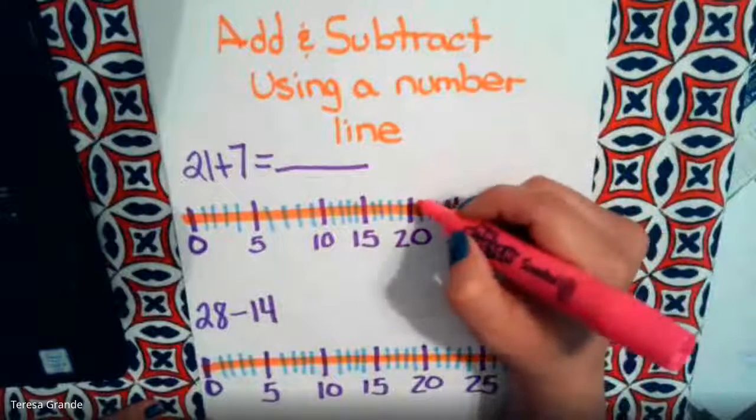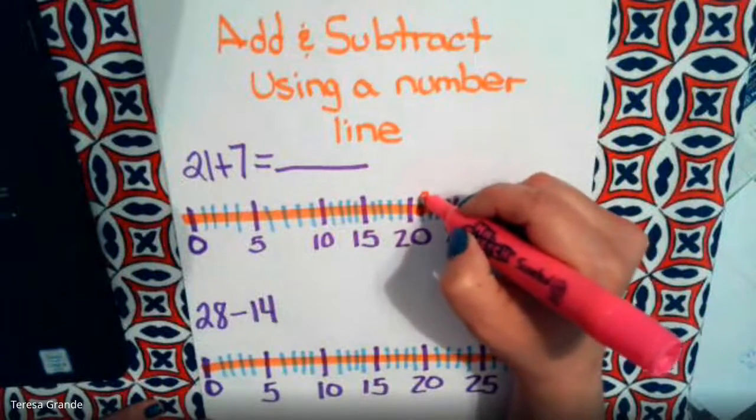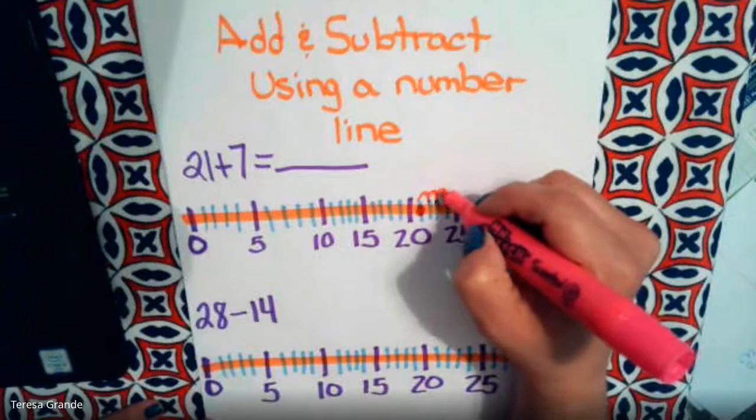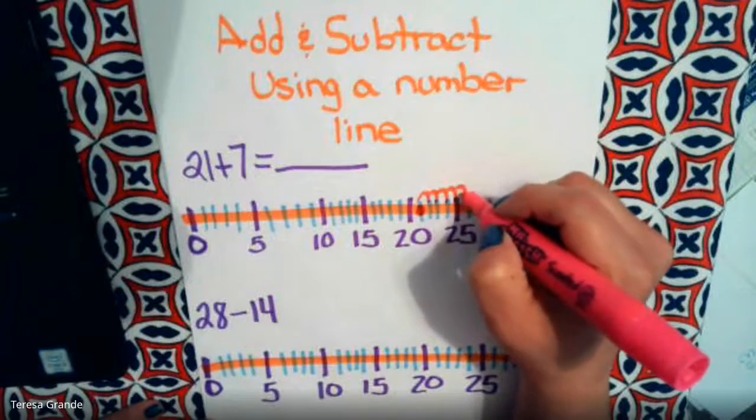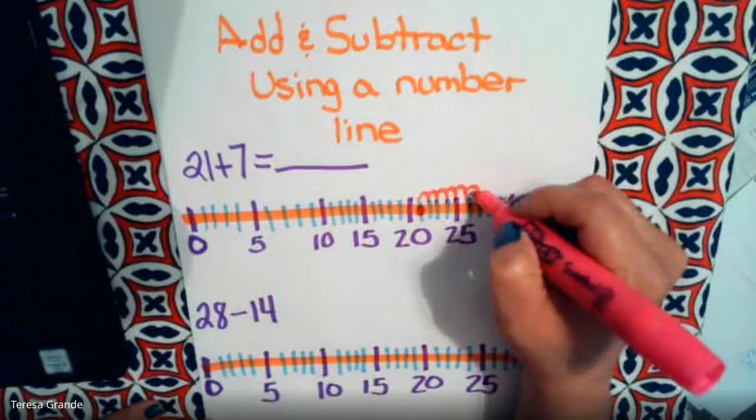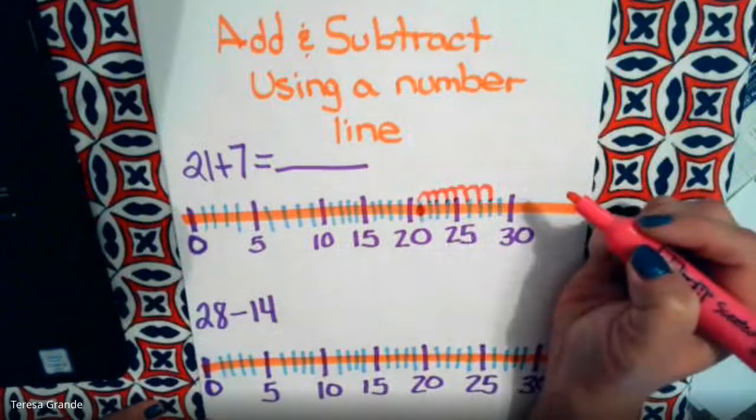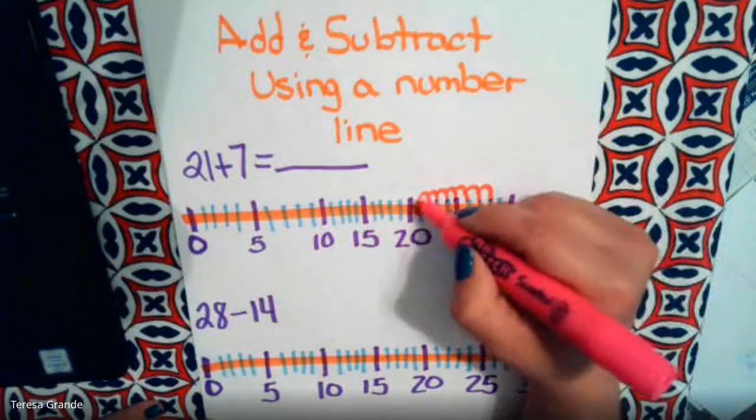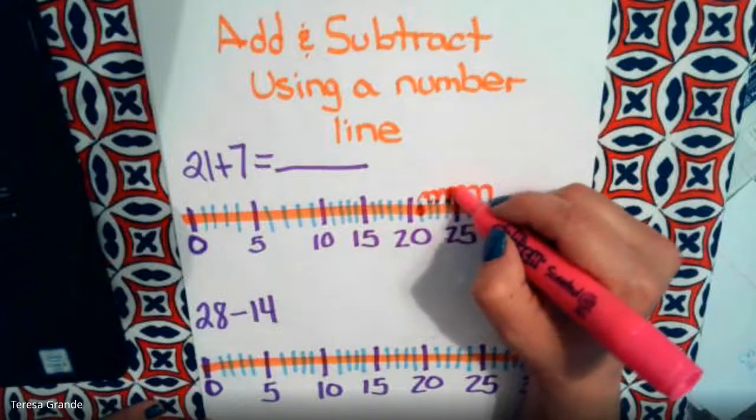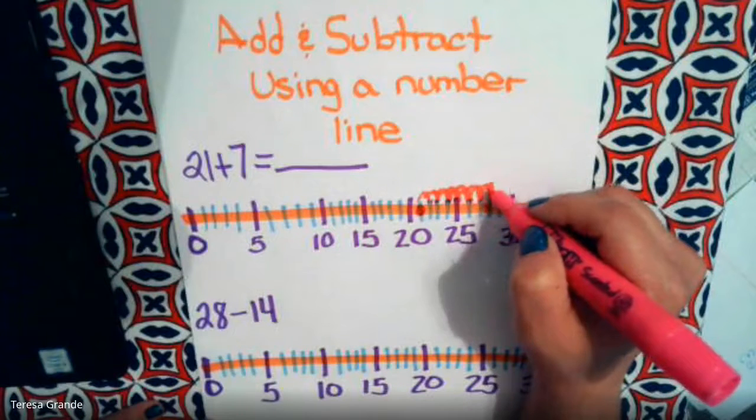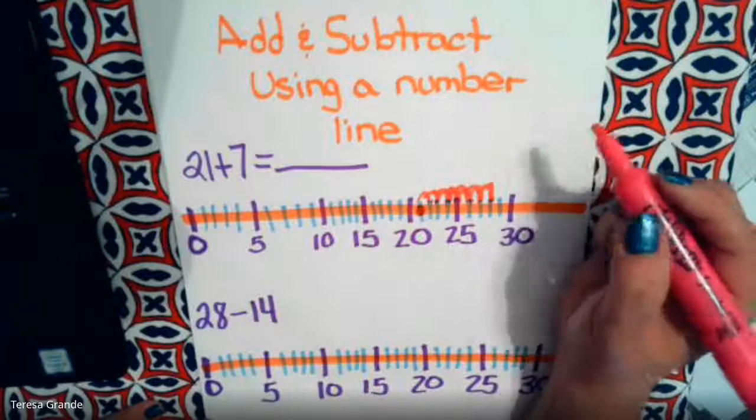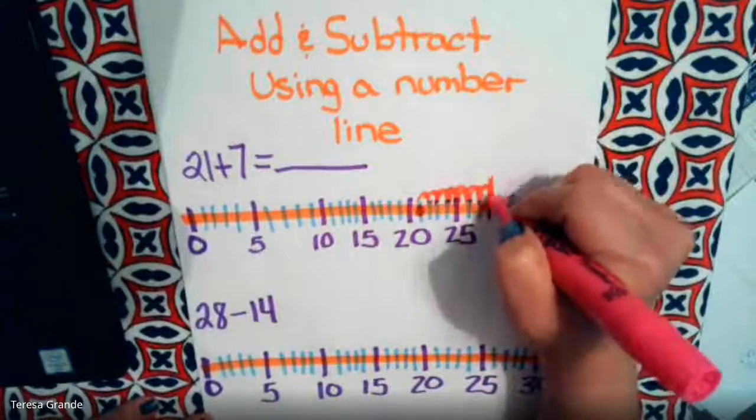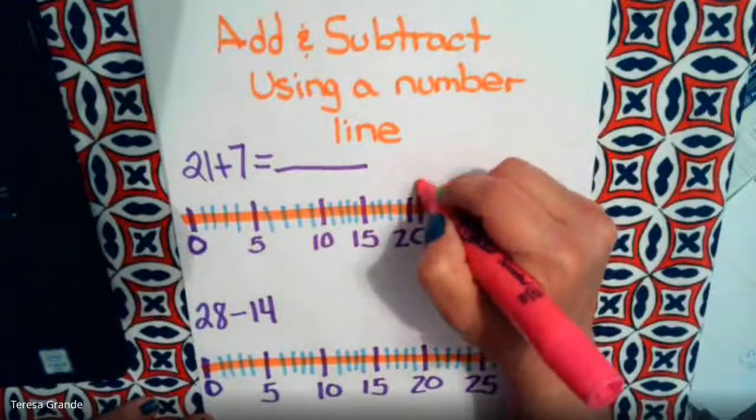Now we need to add 7, so we're going to go one, two, three, four, five, six, seven. So we're going to draw a line from here to here to here.